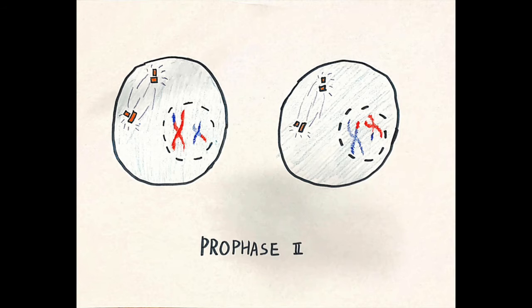Meiosis II is a meiotic division of each of the haploid cells produced in meiosis I. During prophase II, the chromosomes condense and a new set of spindle fibers form. The chromosomes begin moving towards the equator of the cell. Prophase II prepares the cell for a secondary meiotic division,